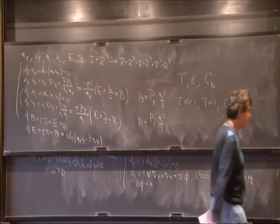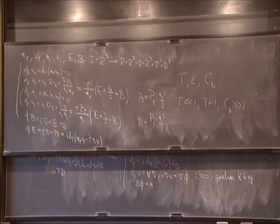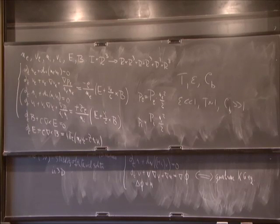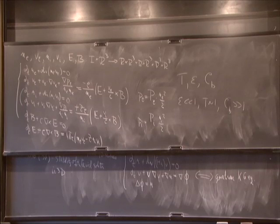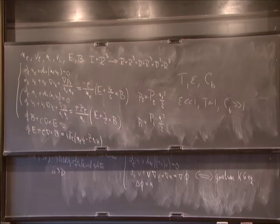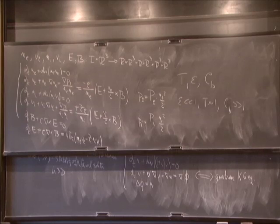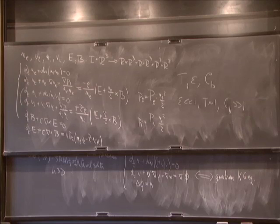The theorem is that if we have small data and irrotationality, then this leads to global solutions and scattering. The constraints are preserved. There's one energy I'll write in a moment. So: global solutions and decay, and the decay is t^{−1−β} decay, so we have a little room to give.